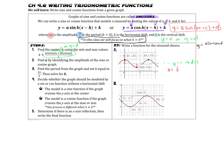Third, we find the period from the graph and set it equal to 2π over B. We look at a full cycle — starting at 0, when does it get back to the same spot? That's happening from here to here. We're starting at 0 and making a full cycle at π, so the period is π. Since the period equals 2π divided by B, we solve: B times π equals 2π, so B equals 2.